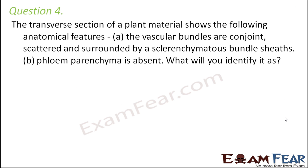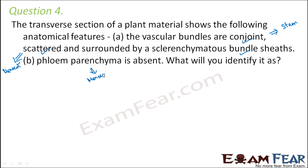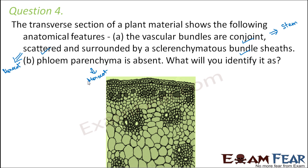The next question: a transverse section of a plant material shows vascular bundles that are conjoint, scattered, and surrounded by a sclerenchymatous bundle sheath. Since the vascular bundles are conjoint, it is a stem. Since they are scattered, it is a monocot stem. Additionally, phloem parenchyma is absent, which confirms it is a monocot stem because in dicot stems phloem parenchyma is present. Therefore, this is identified as a monocot stem.